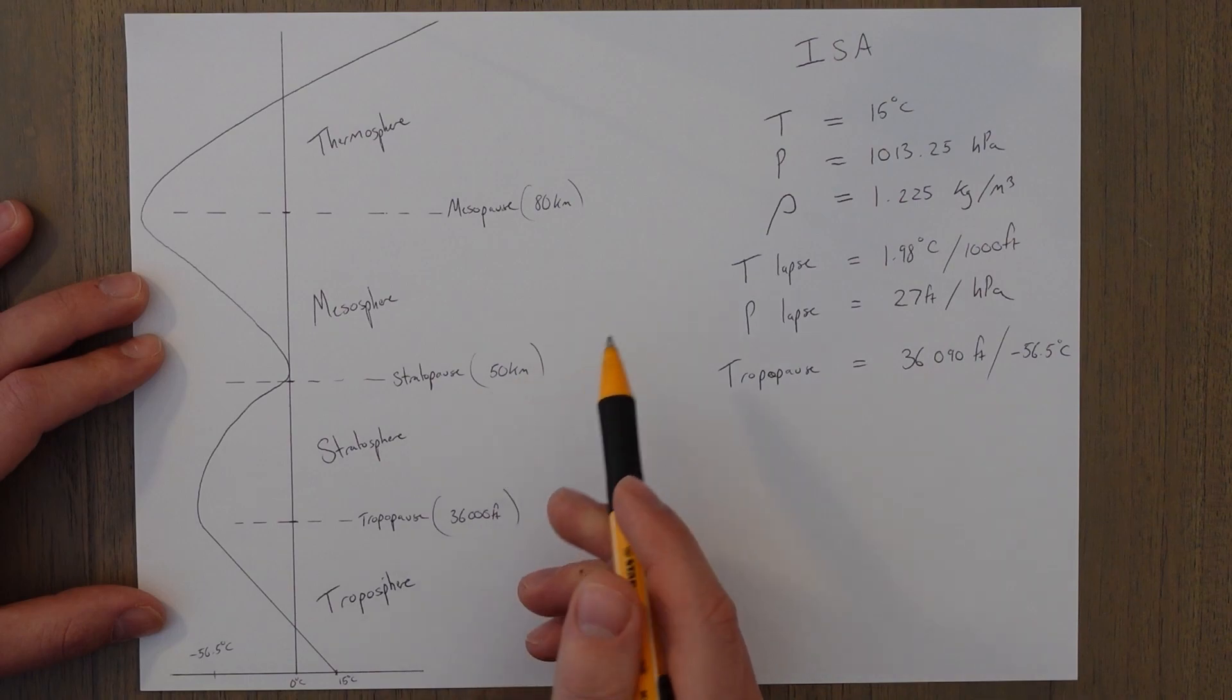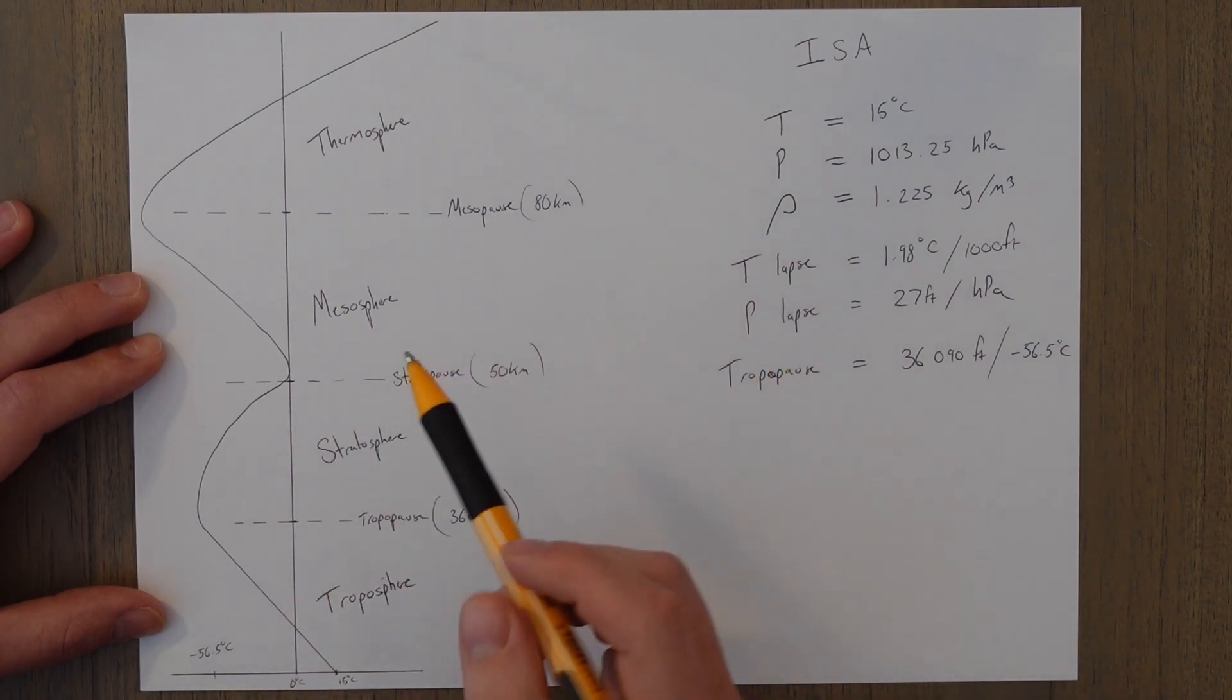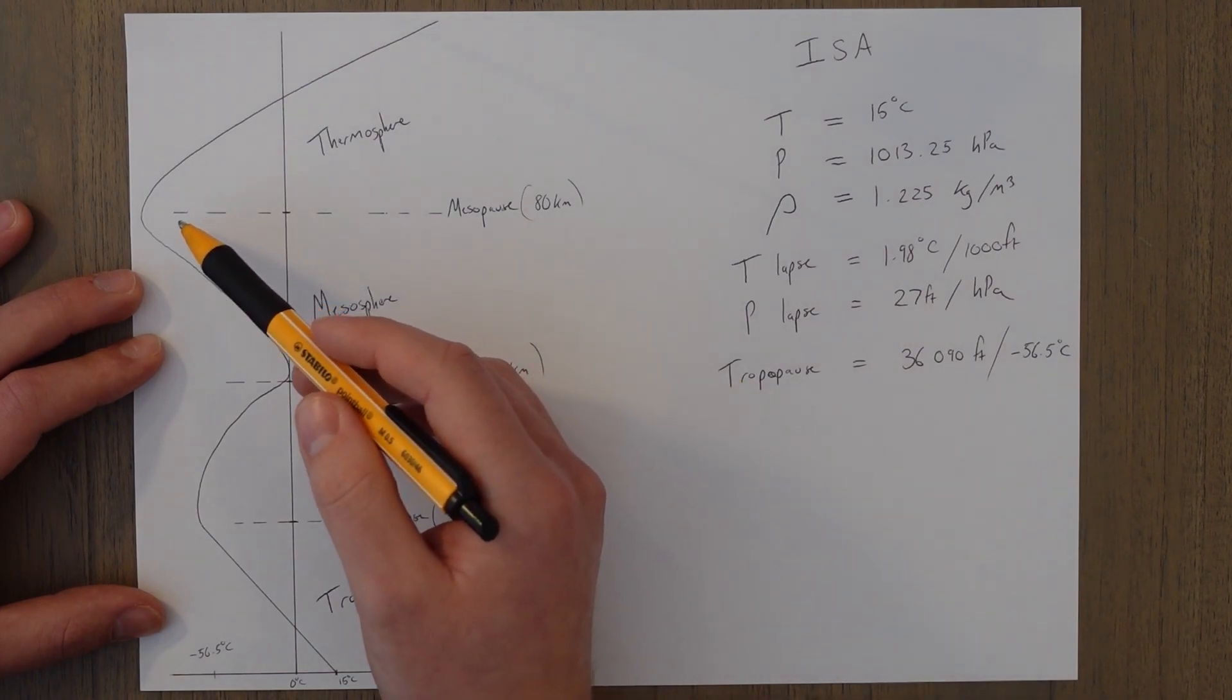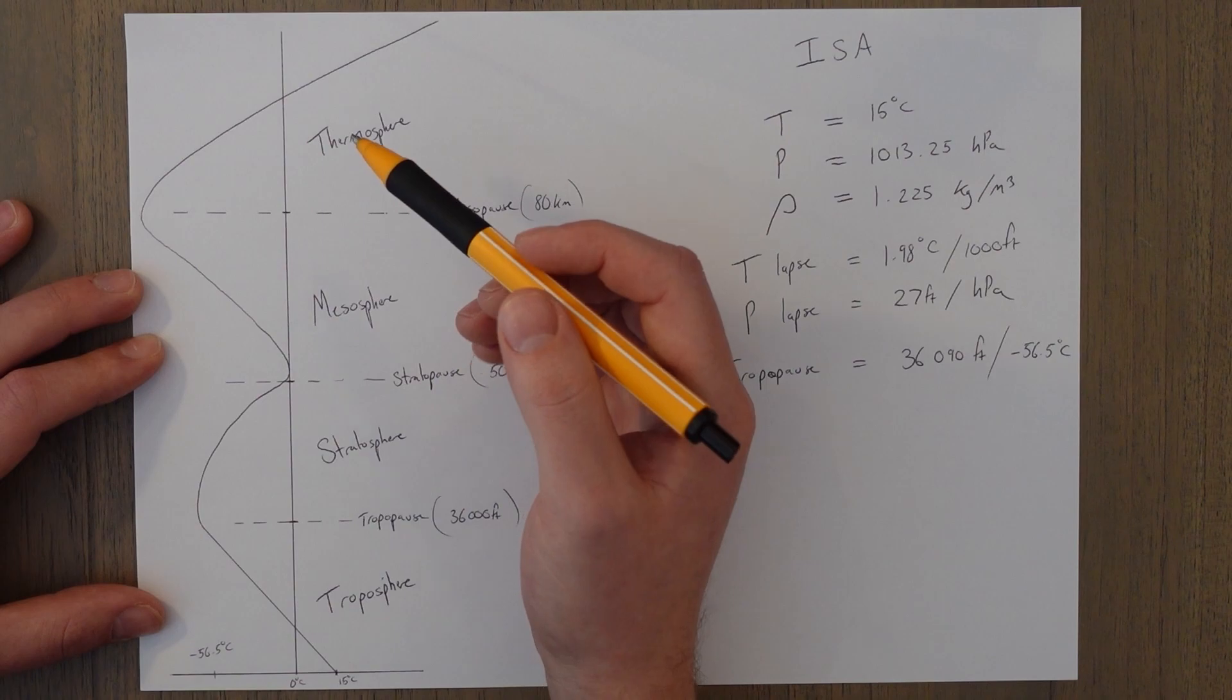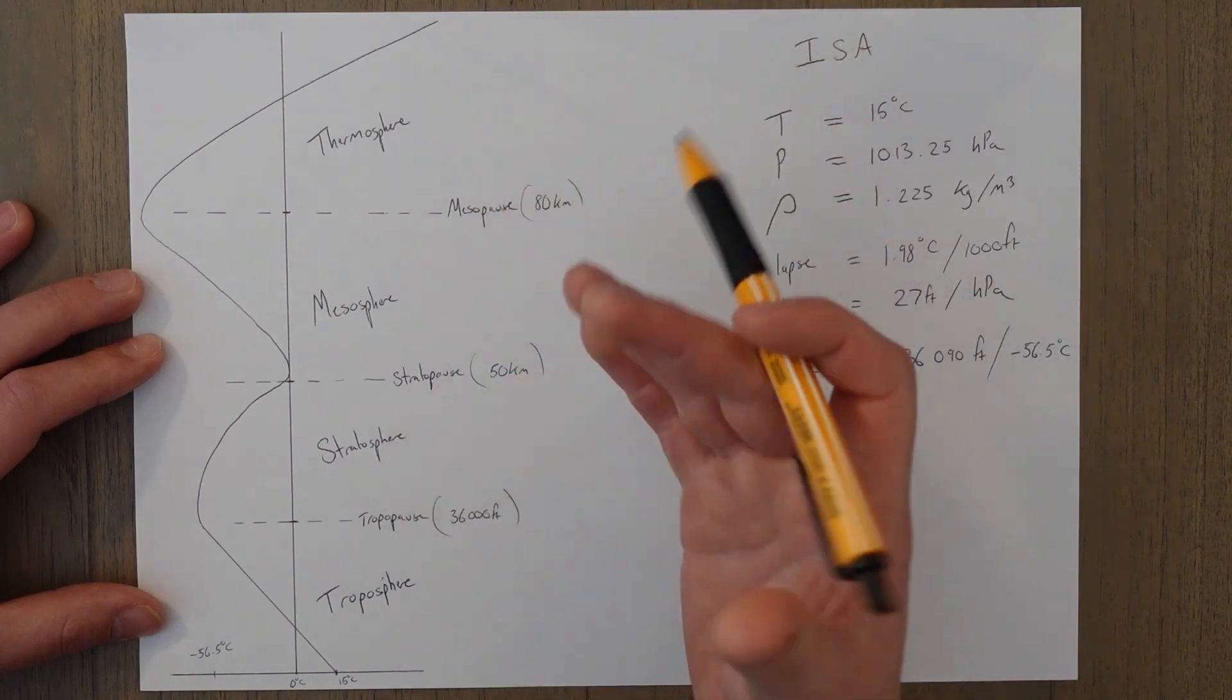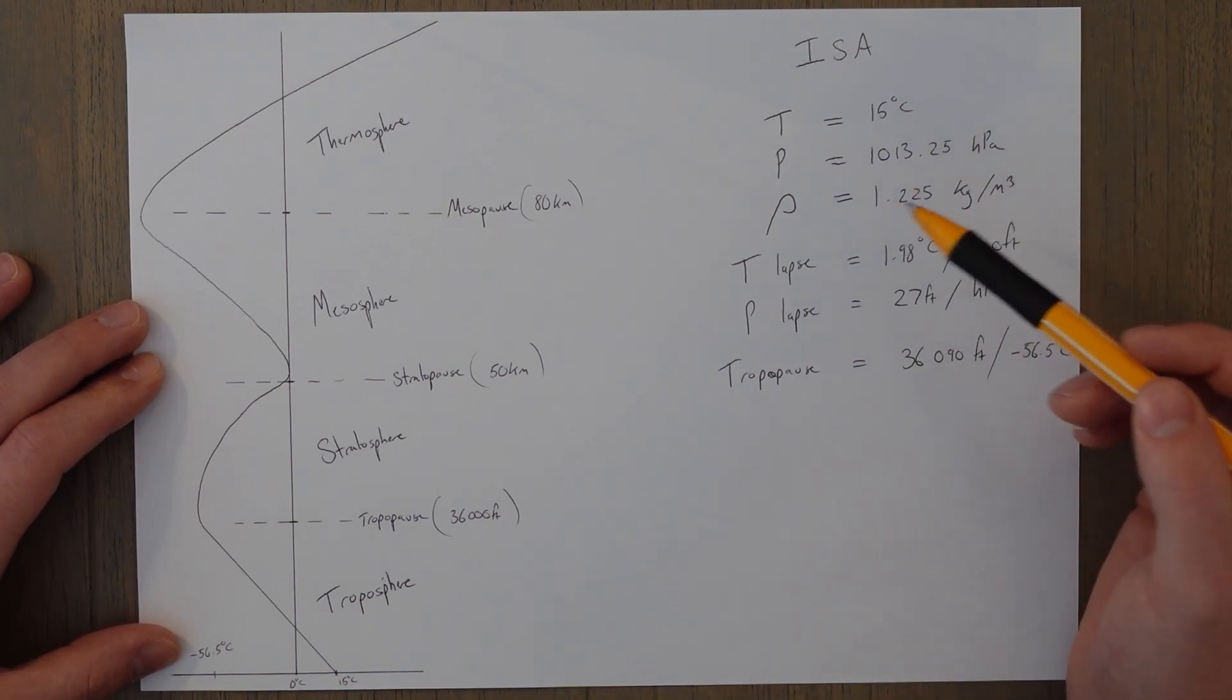Once we reach the stratopause about 50 kilometers up, the ozone is no longer present, so again we start to reduce in temperature until we reach the mesopause, which is about 80 kilometers up. Then at this point the effect of the sun is quite prevalent and it heats up the air, and the thermosphere continues up until an undefined point.